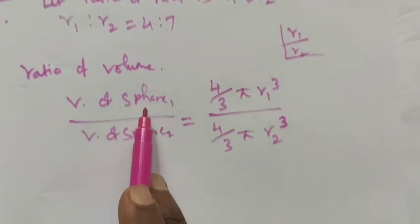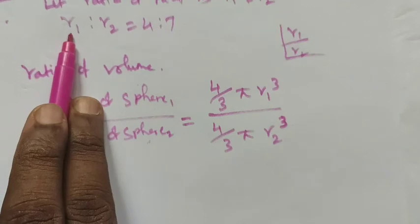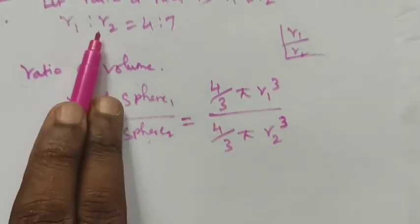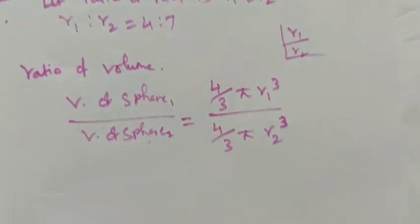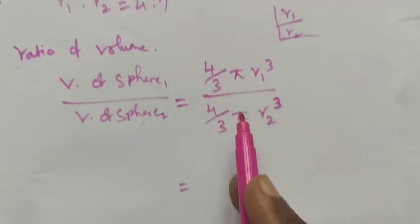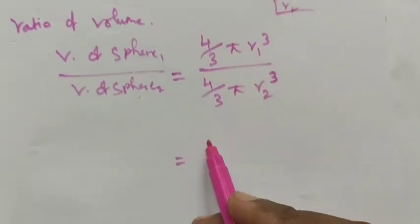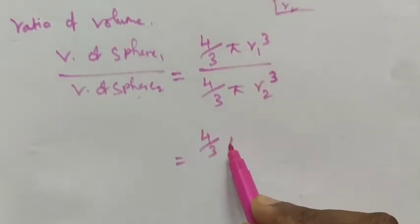Right, the ratio should be written in the form of division. So volume of sphere 1 with radius r1 and volume of sphere 2 with radius r2. Here, 4 by 3 and pi will be cancelled, and then r1, r2 values will be applied. So I write one more step here.